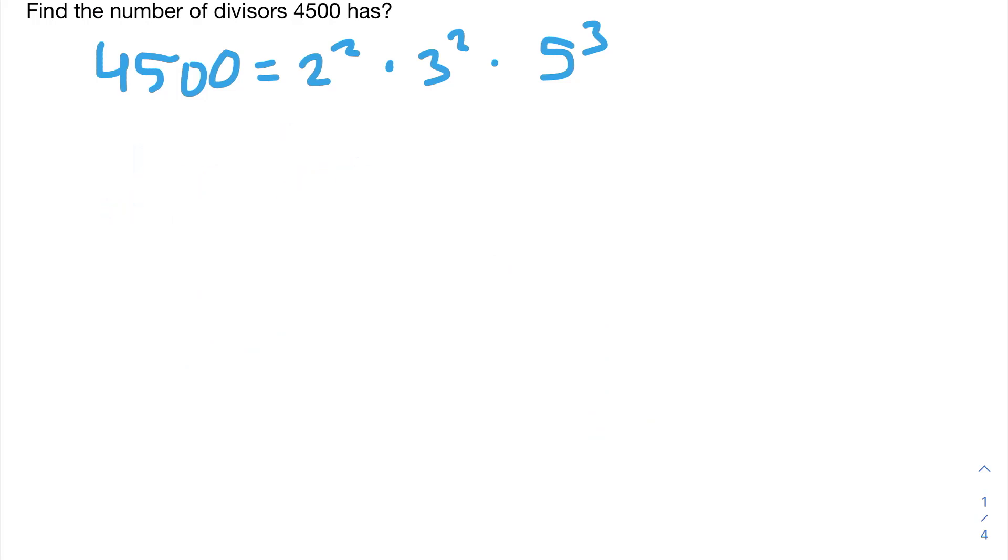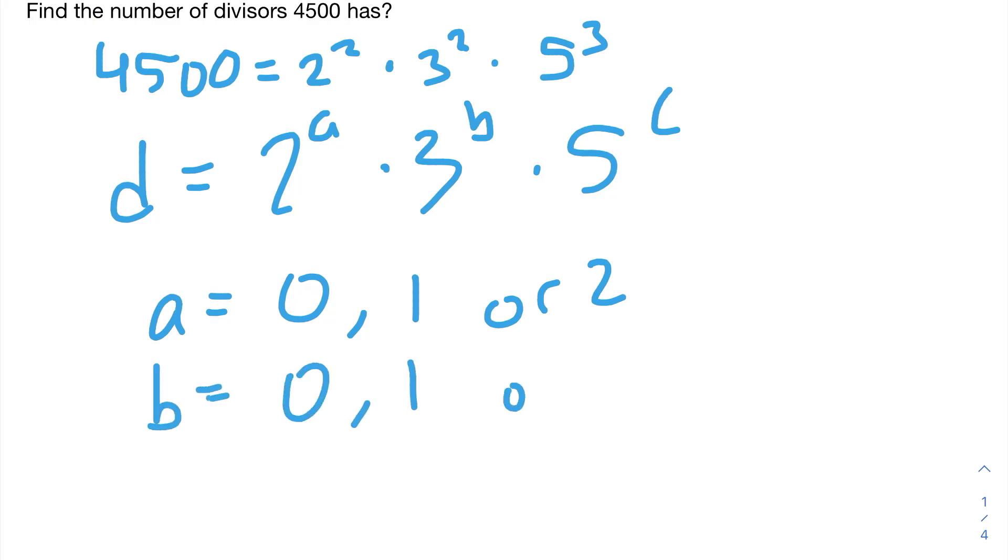So, what did we learn from all this? Well, we learned that D has to be in the form of 2^a times 3^b times 5^c, where a is equal to 0, 1, or 2, b is equal to 0, 1, or 2, and c is equal to 0, 1, 2, or 3.